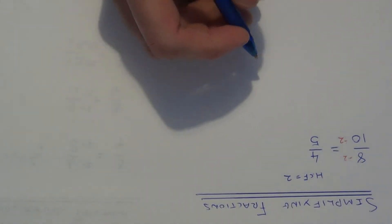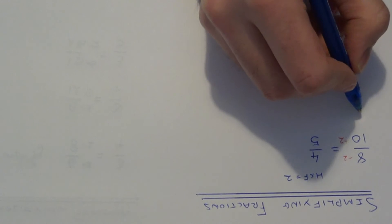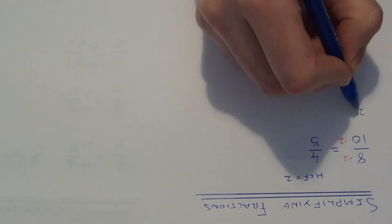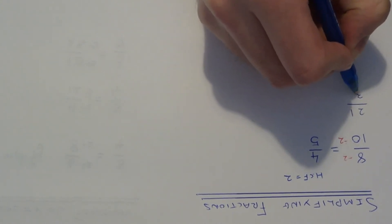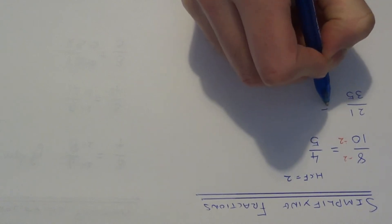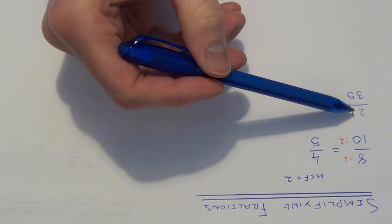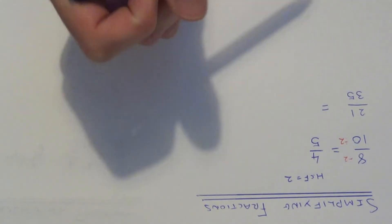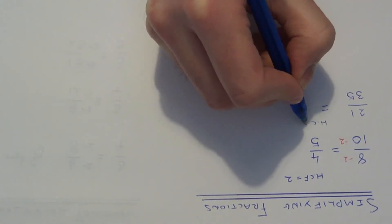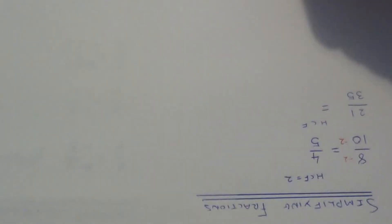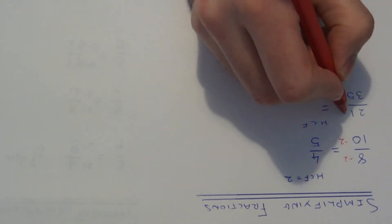Let's take a look at a harder example. So let's simplify 21 over 35. This time again the highest common factor of 21 and 35 is 7. So all we need to do is divide the numerator and denominator by 7.